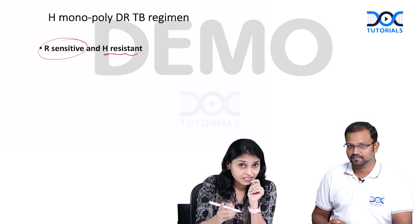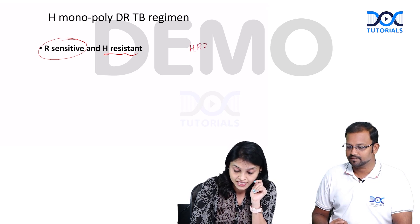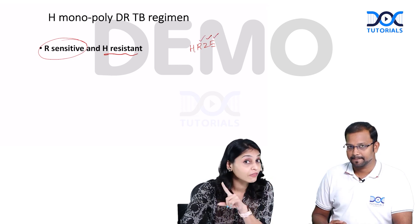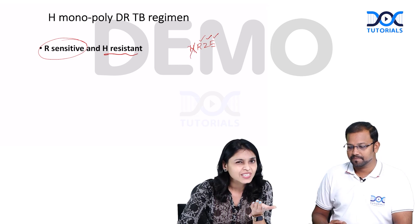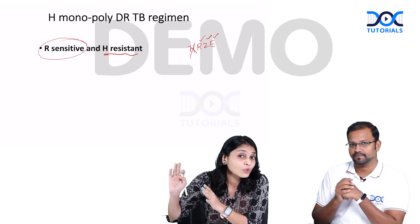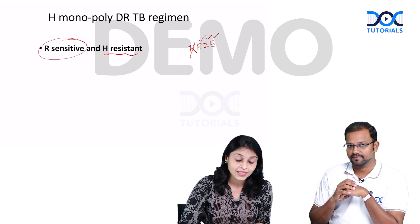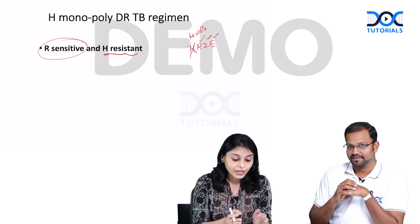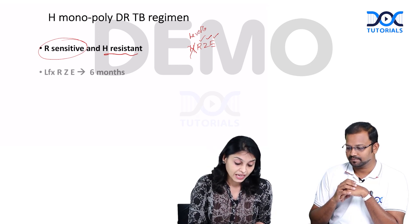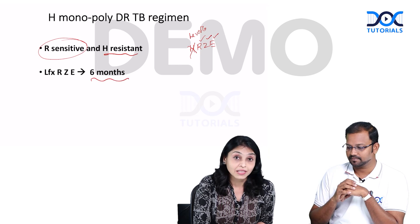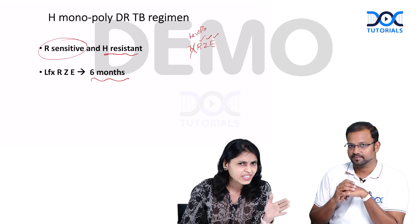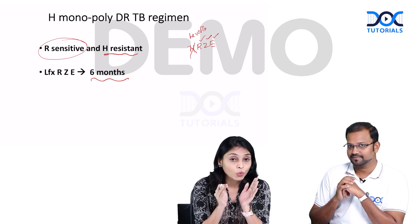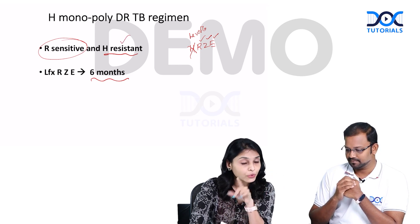So what do you give? We saw the drugs in first-line treatment — H, R, E, Z. This patient is sensitive to R, Z, and E, but will not respond to H. What you do is take out H because it is not going to work, and replace it with levofloxacin. That is nothing but your H mono or poly DRTB regimen, which is given for six months continuously. There is no intensive phase and no continuation phase — it is given as one continuous six-month regimen for a person who is resistant to INH but sensitive to rifampicin.